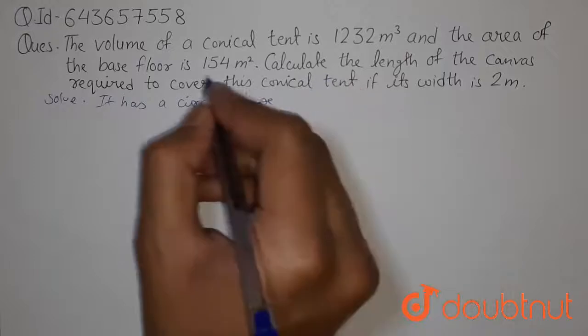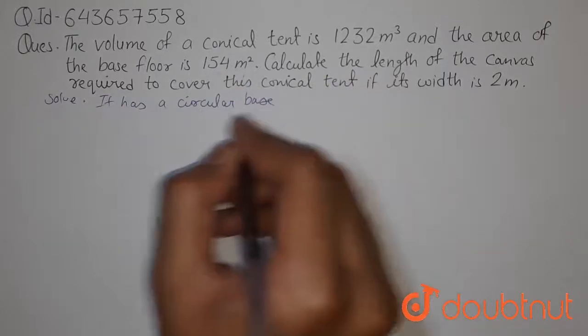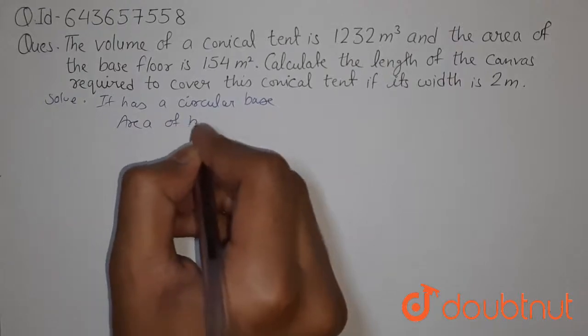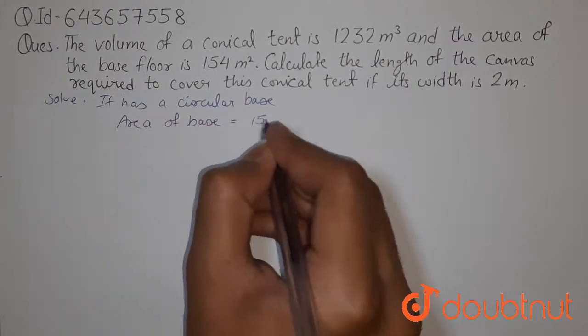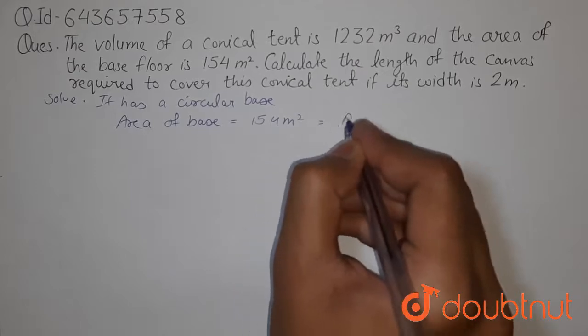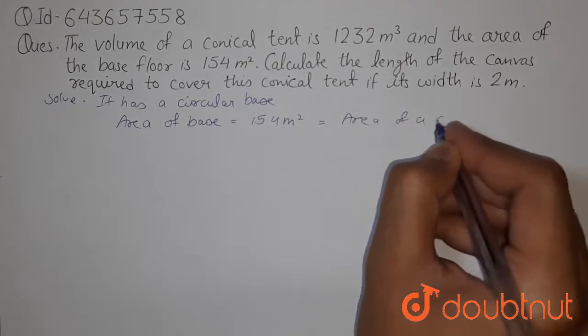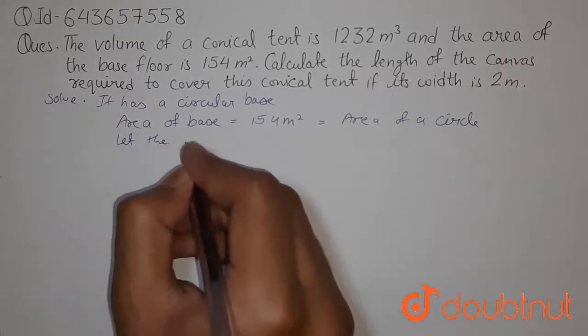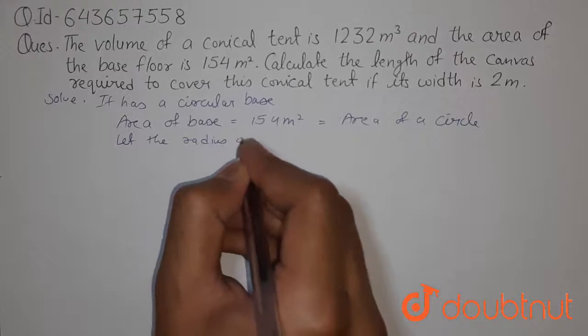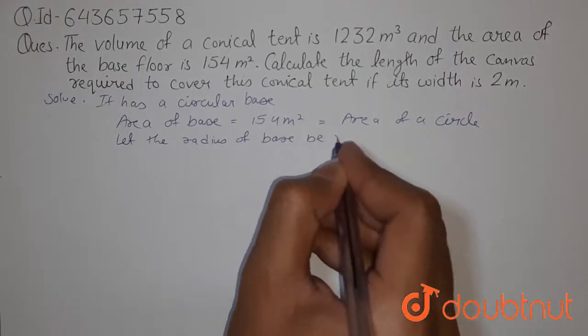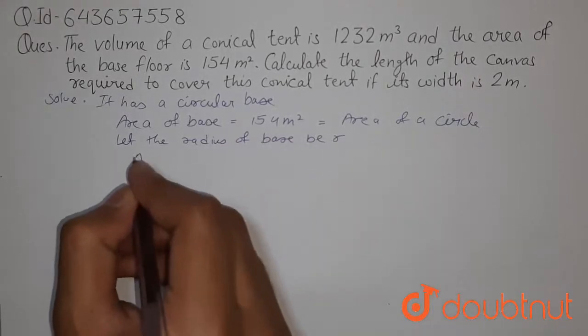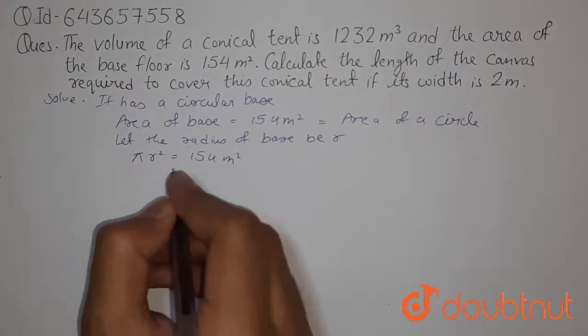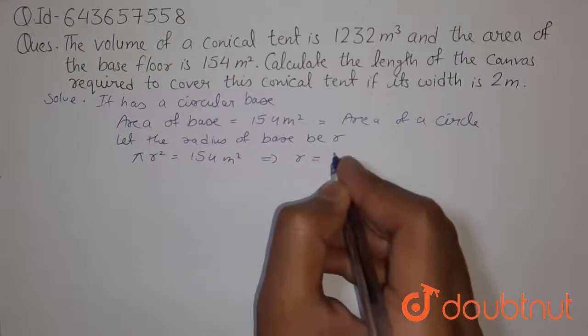This area represents the area of a circle. So we can write area of base, that is 154 meter square, will be equals to area of a circle. Let the radius of base be R. So we can write π R² equals 154 meter square. From this we will get the radius as 7 meter.